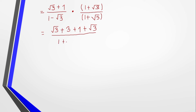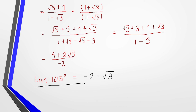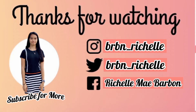For the denominator using FOIL: 1 times 1 is 1, and 1 times square root of 3 is square root of 3. Then negative square root of 3 times 1 is negative square root of 3, and negative square root of 3 times negative square root of 3 is negative square root of 9, which equals negative 3. So we have the denominator as 1 minus 3. Combining like terms: 4 plus 2 square root of 3 over negative 2. The result of tan 105 degrees equals negative 2 minus square root of 3.